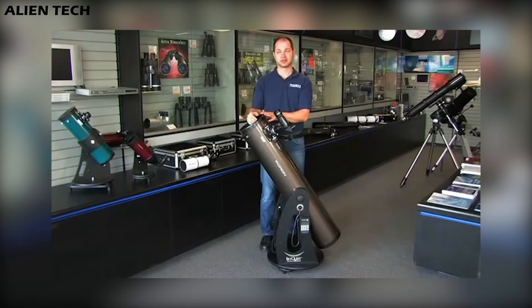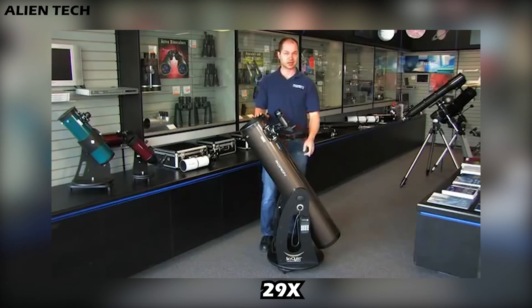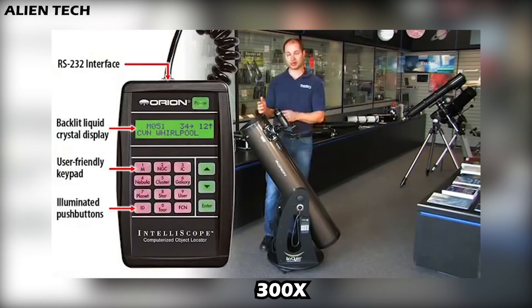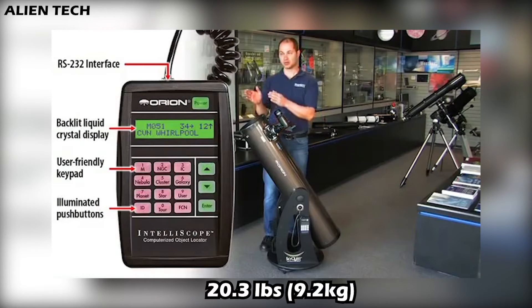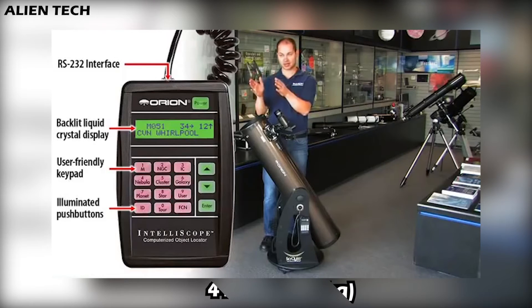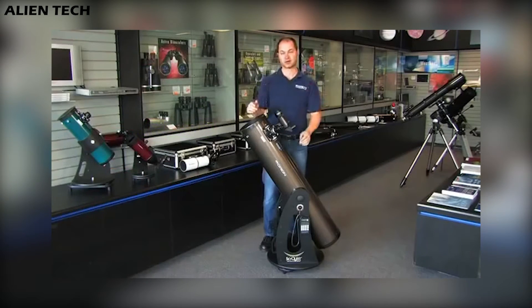The telescope comes with two Sirius eyepieces — one is 25 millimeters and the other is 10 millimeters. The lowest useful magnification is 29x and the highest useful magnification is 300x. The weight of the optical tube is 20.3 pounds, the weight of the mount is 21.3 pounds, and the total weight of the assembly is 41.6 pounds. With this telescope you can see planets, nebulae, and galaxies.